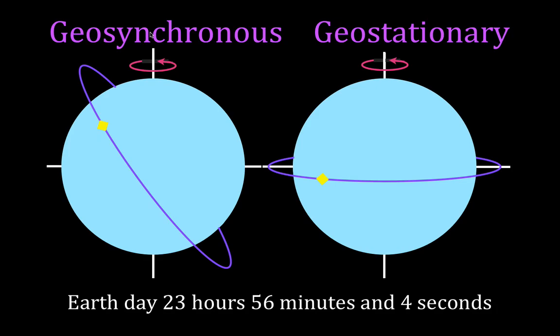The time for the Earth to spin and the time for the satellite to orbit the Earth — that occurs in one day, 23 hours 56 minutes and 4 seconds, which we often round to 24 hours. So if you have a geosynchronous orbit, as the Earth rotates once on its axis, the time it takes for the satellite will be the same time.